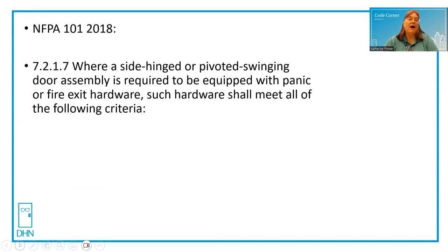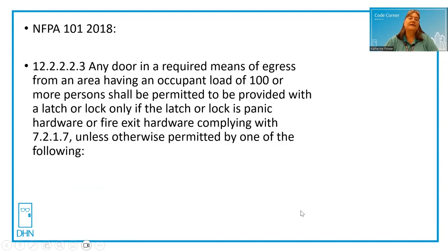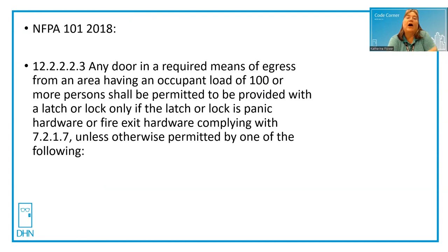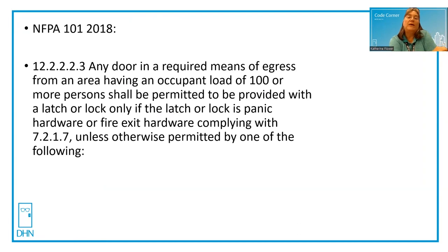And then you have to go to the occupancy chapter. Let's look at Chapter 12 for new assembly occupancies. Here's our reference to that fundamental Chapter 7: any door in required means of egress from an area having an occupant load of 100 or more persons shall be permitted to be provided with a latch or a lock only if the latch or lock is panic hardware or fire exit hardware complying with 7.2.1.7, unless otherwise permitted by one of the following — and it will list the exceptions.